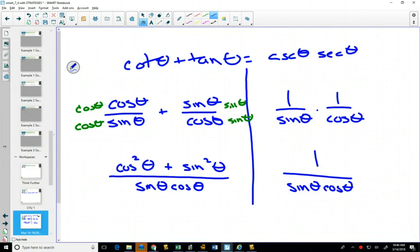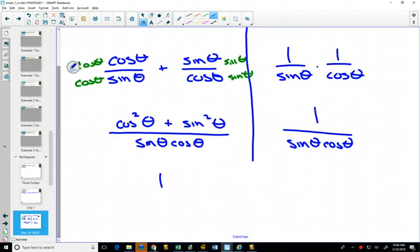So now I have succeeded in getting a single fraction on both sides. And they're not quite the same. Cos squared theta plus sine squared theta. But yes, cos squared theta plus sine squared theta, that is one of our new identities. Well, it's an old identity. So you can change that to 1.